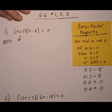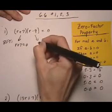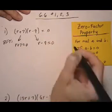So by the zero factor theorem, ZFT, either r plus 7 equals 0, or r minus 9 equals 0, or both.